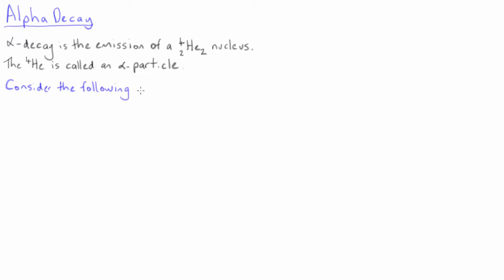Consider the following three nuclei. Polonium-212 with 84 protons and 128 neutrons. Lead-208 with 82 protons and 126 neutrons, and helium-4 with two protons and two neutrons.